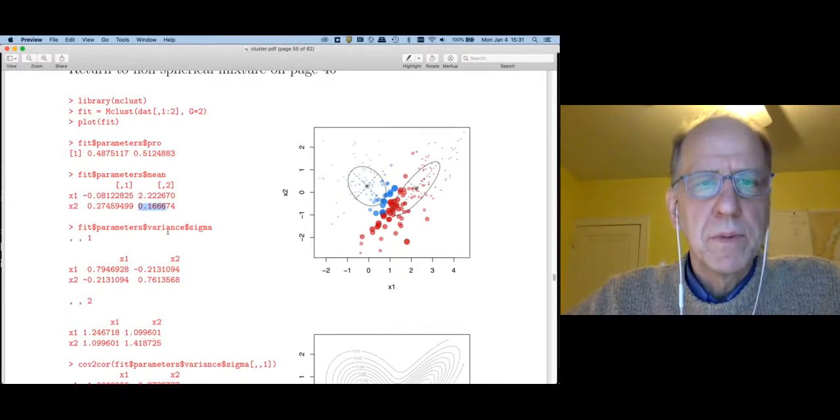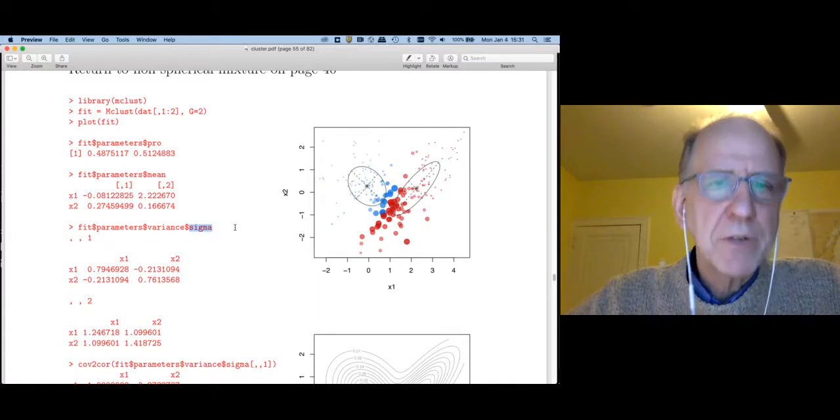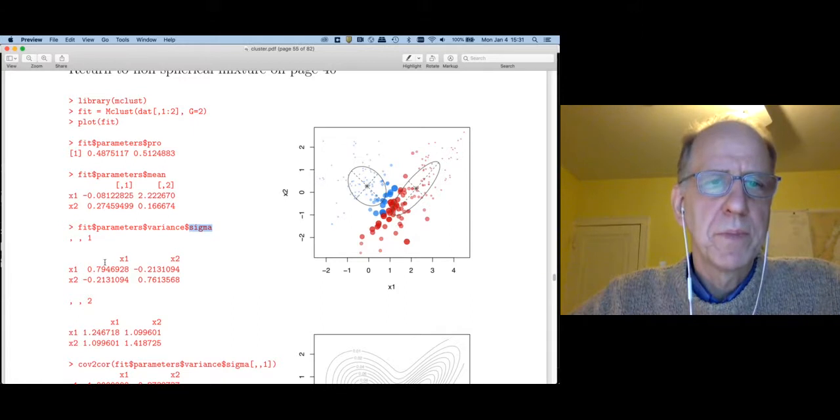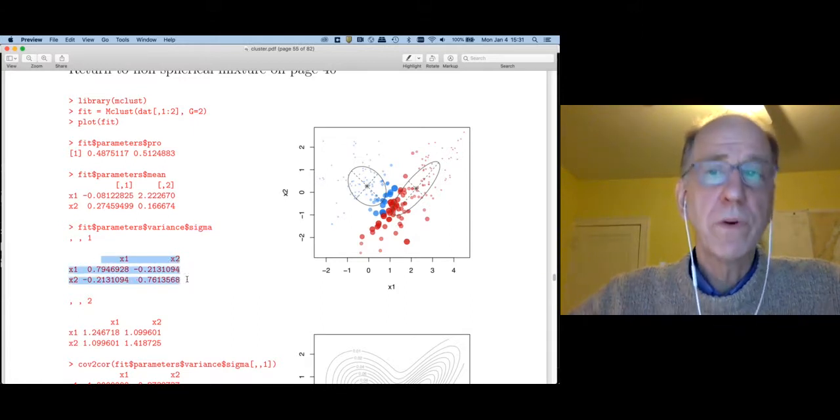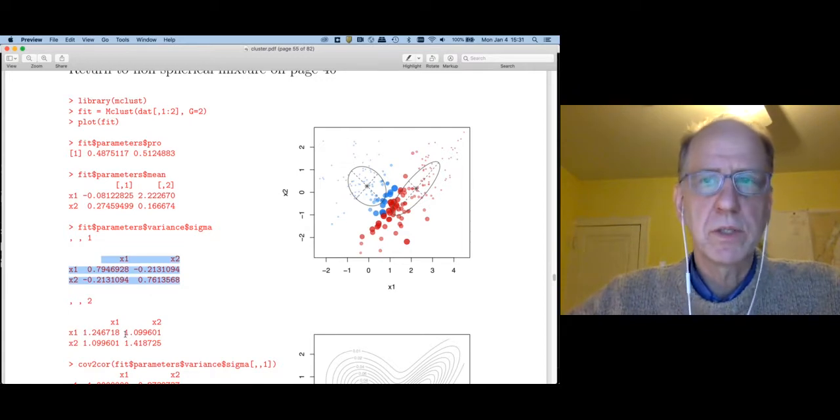Fit dollar parameters, dollar variance, dollar sigma, actually gives the covariance matrices for the two classes. The first part is going to be the covariance matrix of the blues. The second will be the covariance matrix for the red.